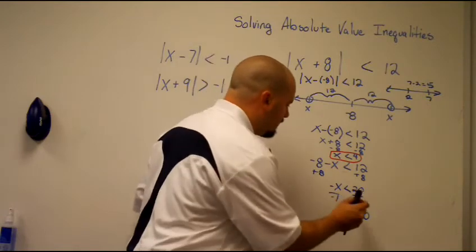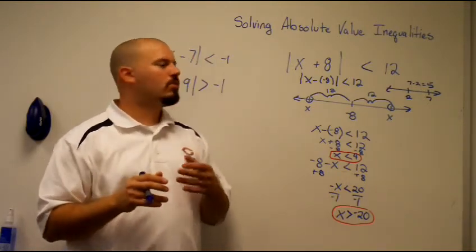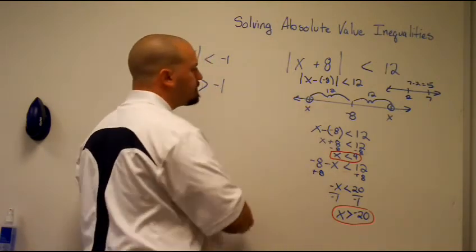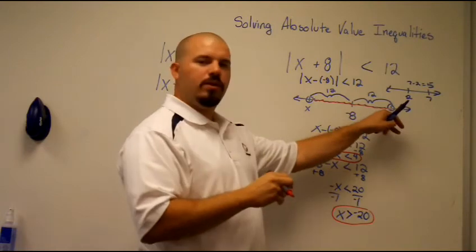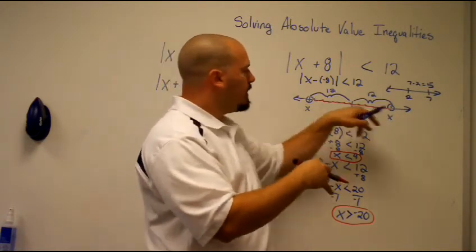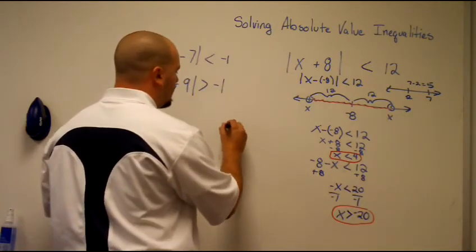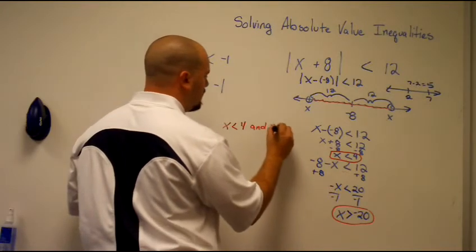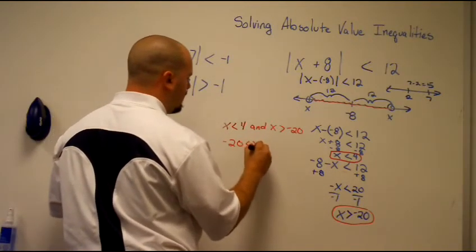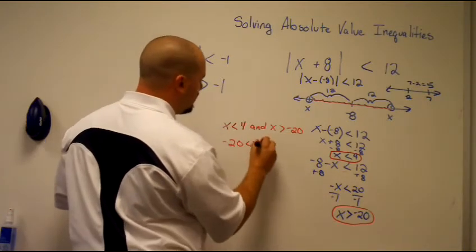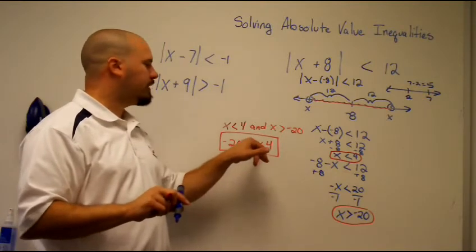So we've got x is less than 4 and x is greater than negative 20. Looking back at the original picture, the possible places where x could fall is between the two endpoints — it has to be both conditions at once, so it's an 'and' connection. We write that as a compound inequality with the smallest number to the left: negative 20 is less than x is less than 4.